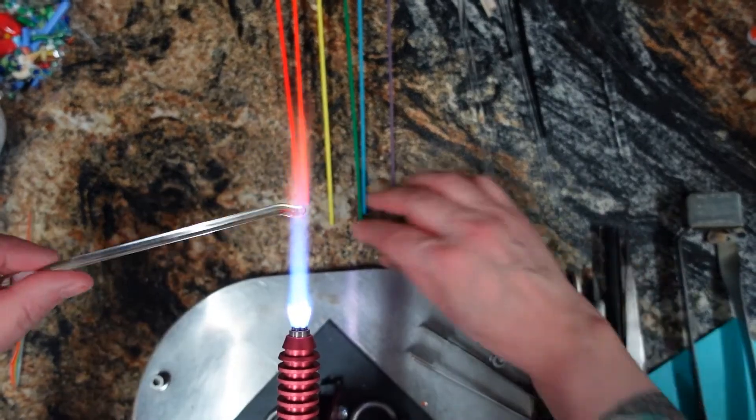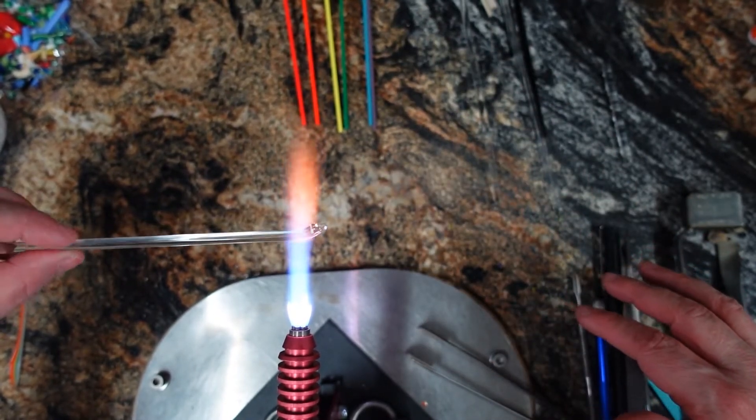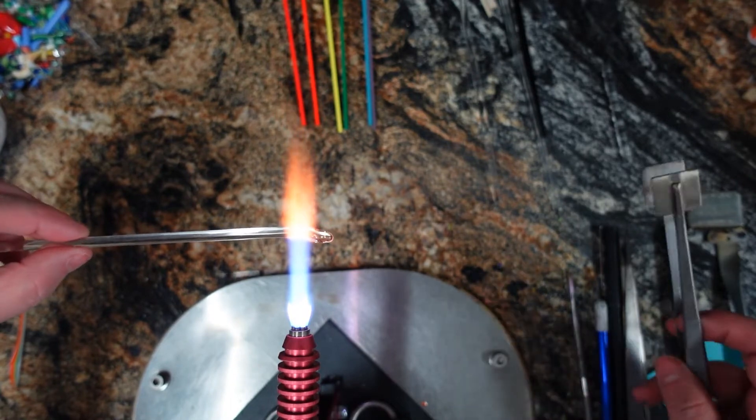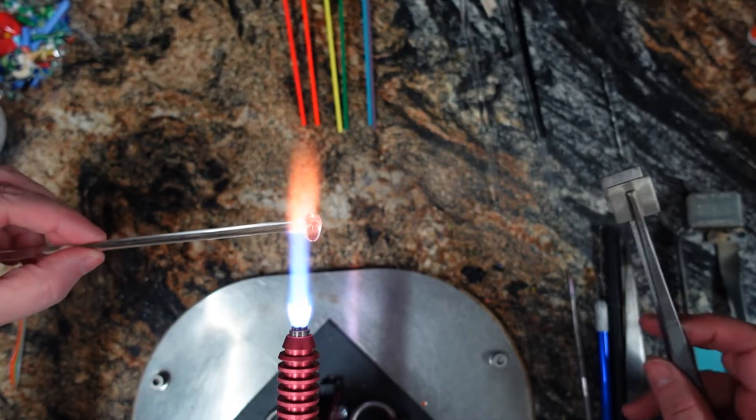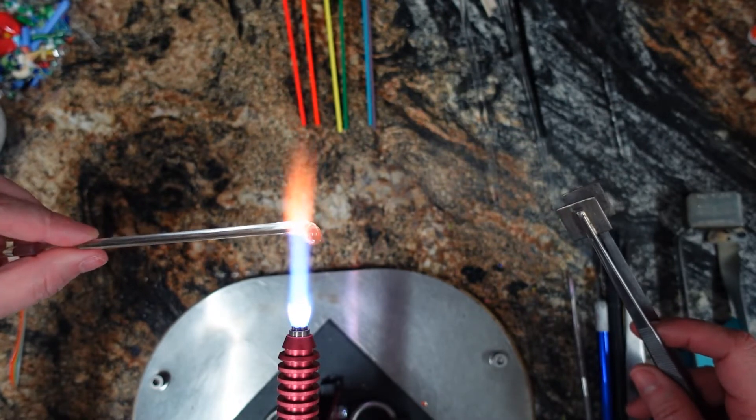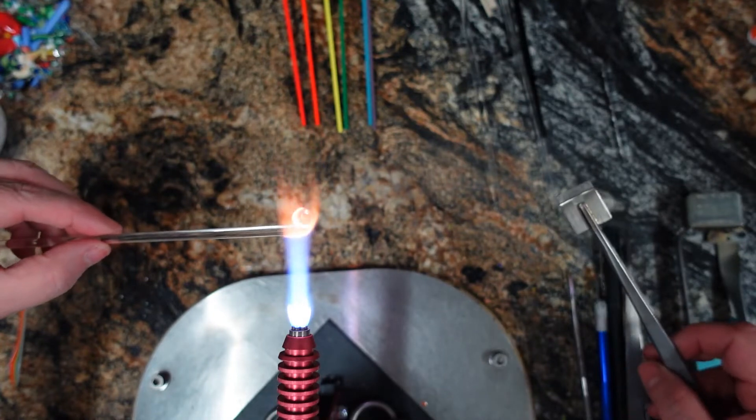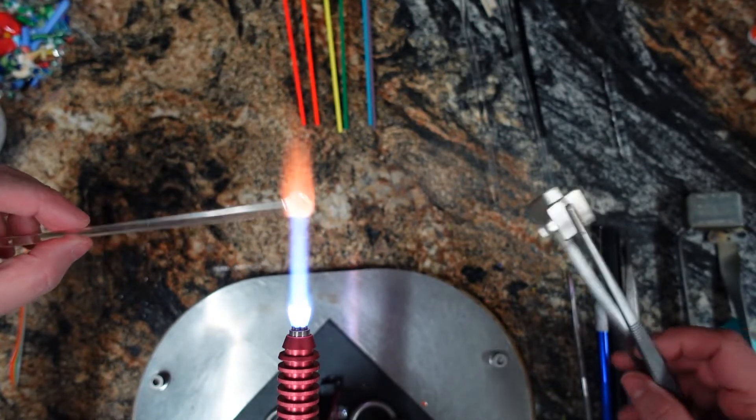Here we go. We're off. I have just my clear and I am melting it into a gather, probably a little bigger than a pea. A mommy size? I don't know. What's bigger than a pea? There we go. Alright, I've got a nice little blob on the end of it.